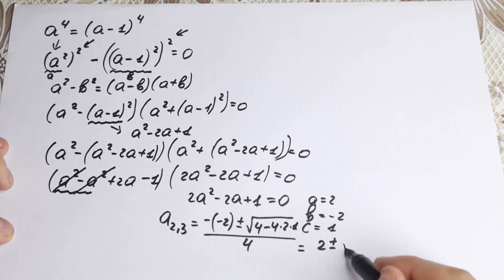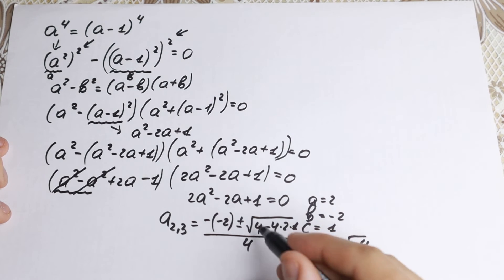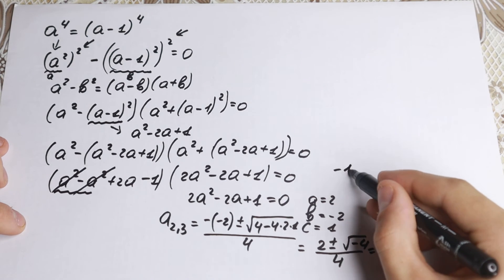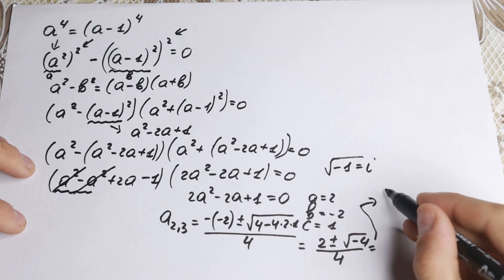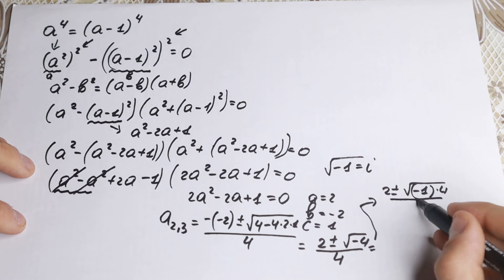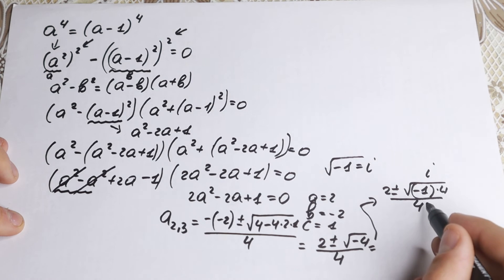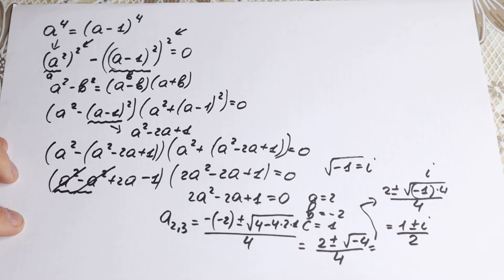We get two plus-or-minus the square root of four minus eight, which is the square root of negative four, all over four. The square root of negative one equals i from complex numbers, so we have the square root of negative one times four. Simplifying, we get one plus-or-minus i, all over two. These are our two complex roots.